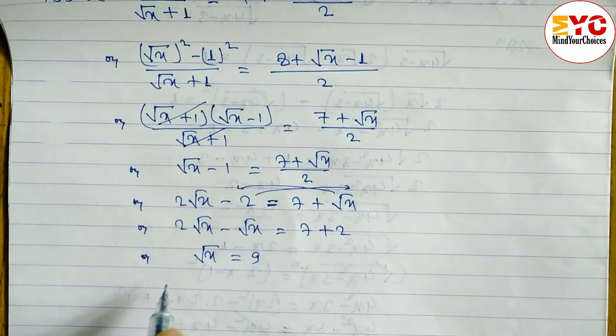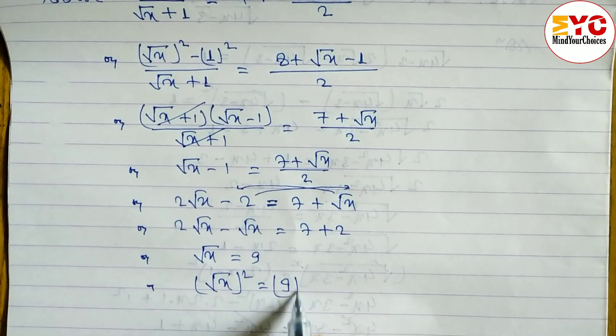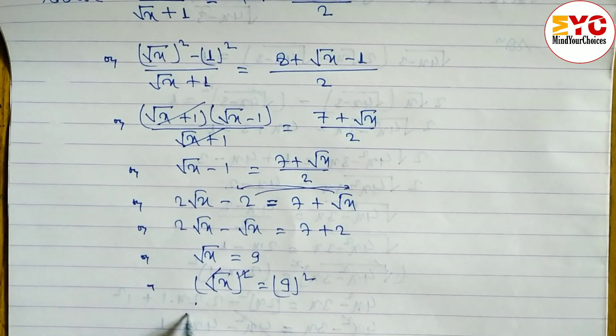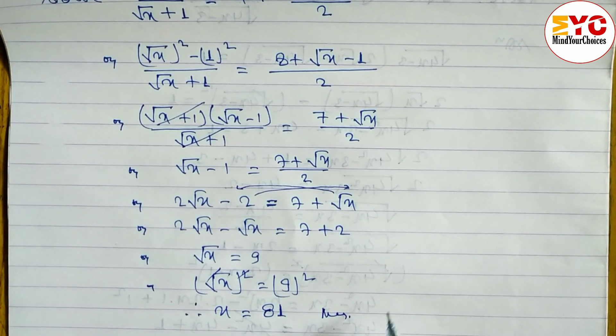Squaring both sides, (√x)² = (9)². The square root and square cancel, leaving x = 81, which is the answer.